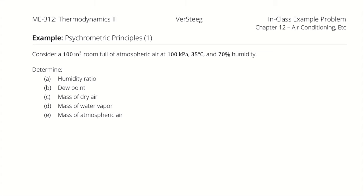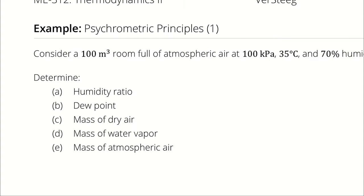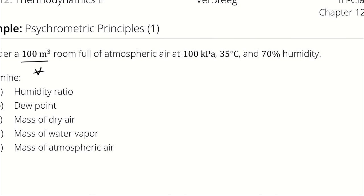To begin, let's parse out these numbers. First question: is this 100 cubic meters the volume of the dry air, the volume of the water vapor, or the volume of the atmospheric air? If you said all of the above, you are correct. Because we're using Dalton's law to model the behavior of atmospheric air, all of the substances within the mixture are assumed to take up the entire volume.